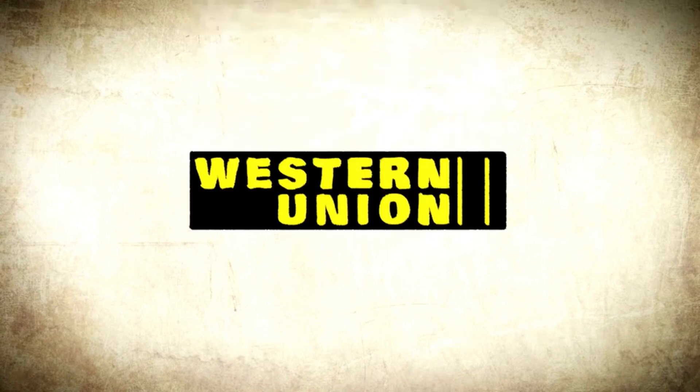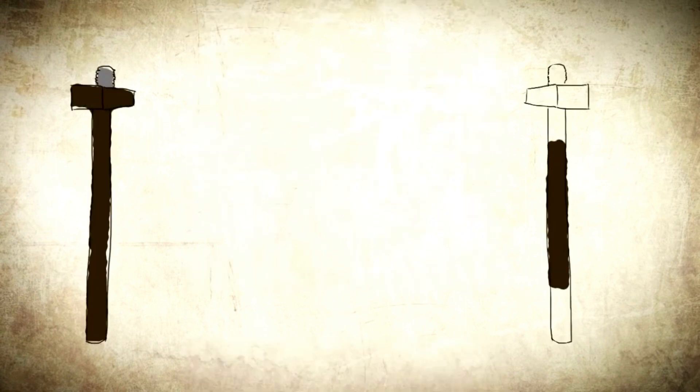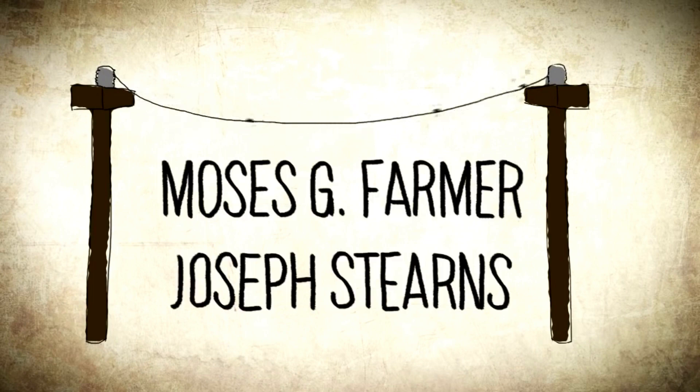He moved to Louisville, Kentucky in 1866 and became an employee of Western Union. Starting in 1872, Edison worked on the quadruplex telegraph system. It allowed telegraphs to send and receive four signals at the same time on the same wire. Edison's system wasn't a new invention, but an improvement on the duplex system created by Moses G. Farmer and Joseph Stearns.